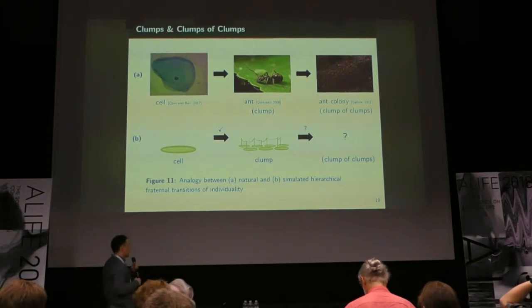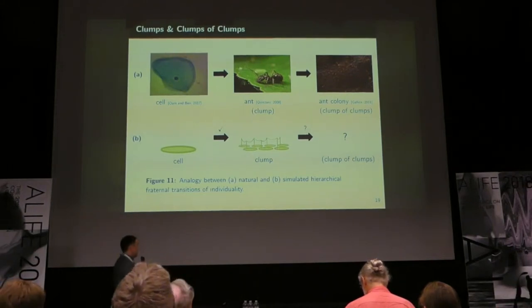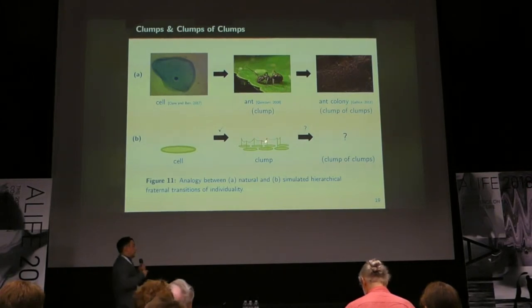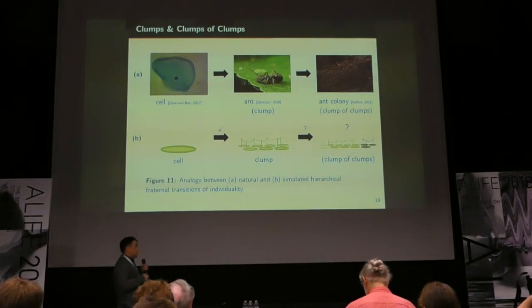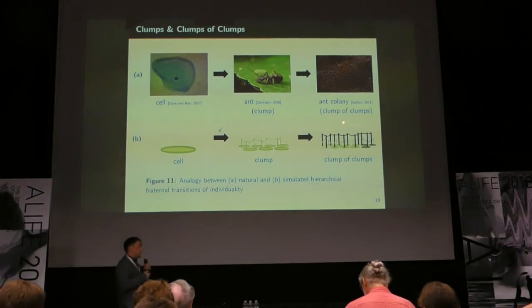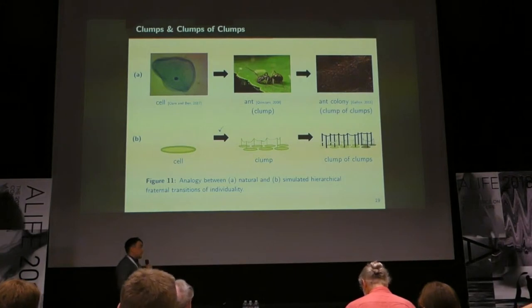What we have so far are cells uniting to become individuals at the clump level, and in this schematic here, the little telephone wires kind of indicate that these cells are coordinating on the resource collection task. And if we want another transition, we're going to put a bunch of clumps together, and how we're going to get these clumps to unite is by defining a separate resource collection task that needs to be completed at a larger scale, and so these clumps are going to unite into a clump of clumps at this larger scale.